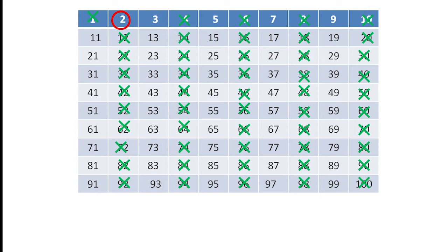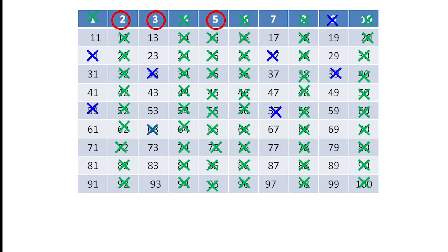3 is also a prime number because 3 has only 2 factors. 5 is a prime number, and all the multiples of 5 are composite numbers. 3 is a prime number and all the multiples of 3 are composite numbers, so I am going to cross out all the multiples of 3. Some multiples of 3 I have already crossed out, and the remaining ones I have now crossed out.